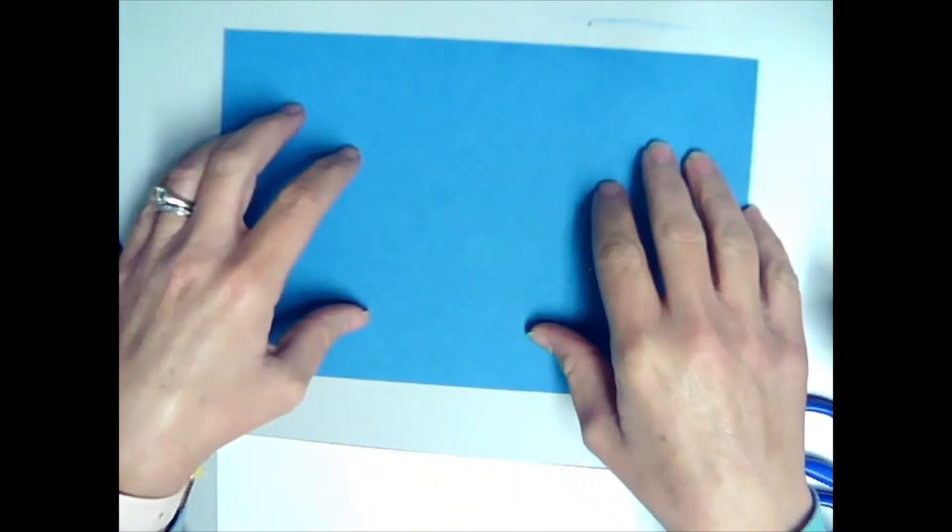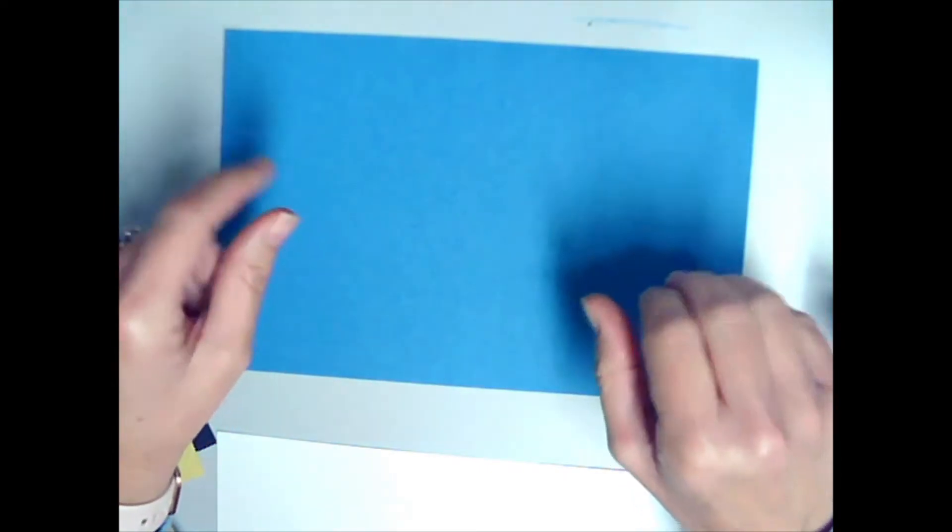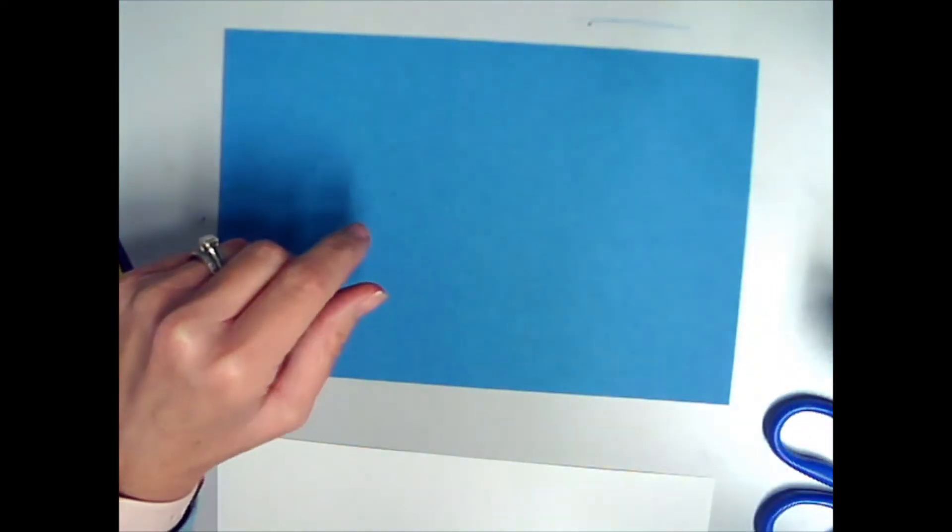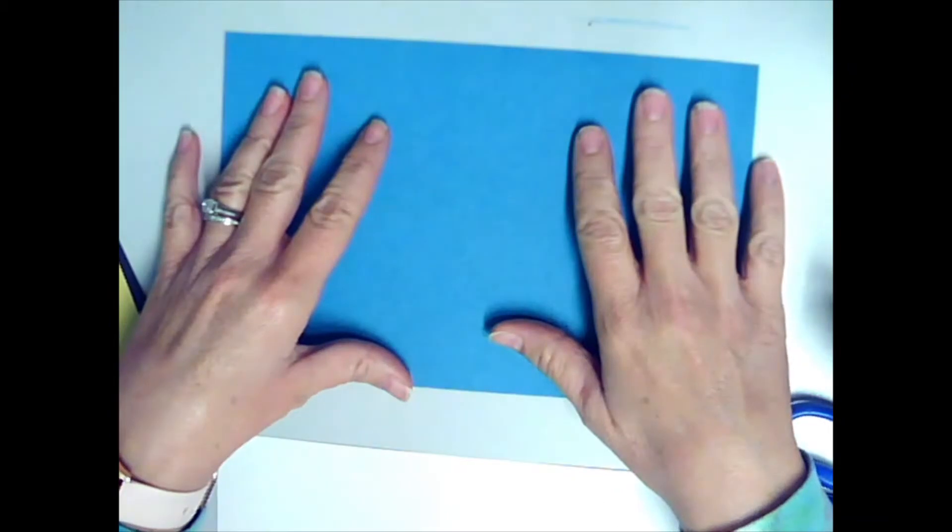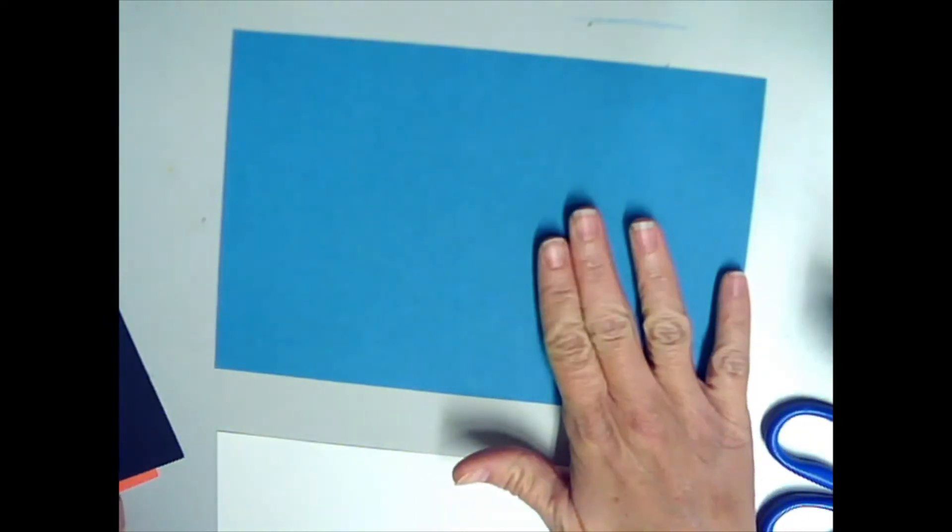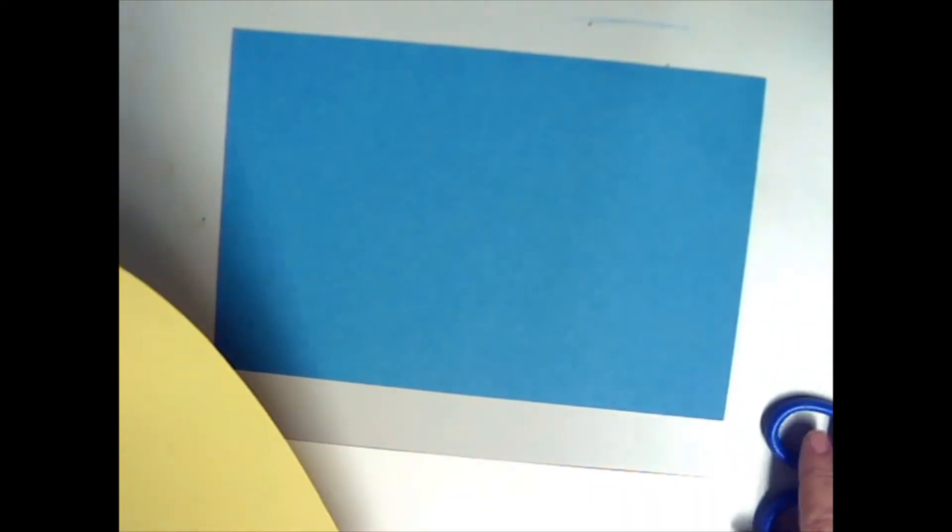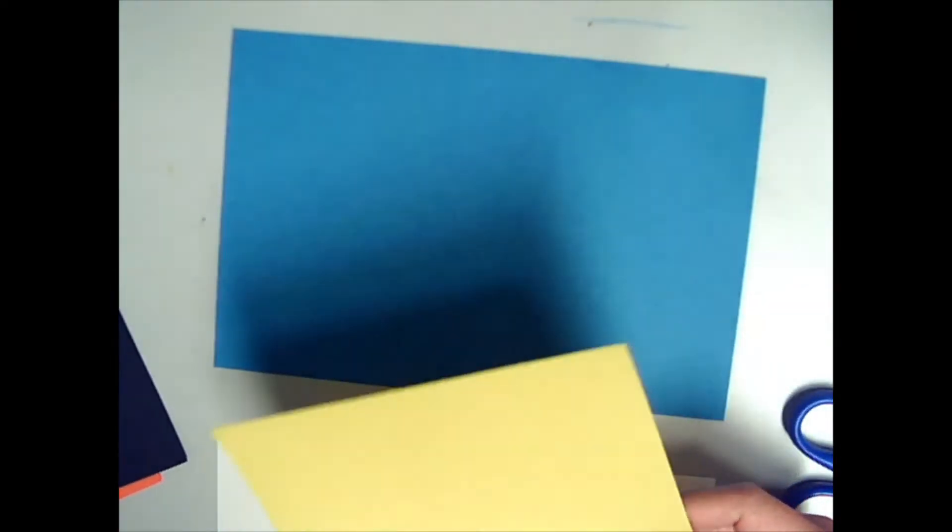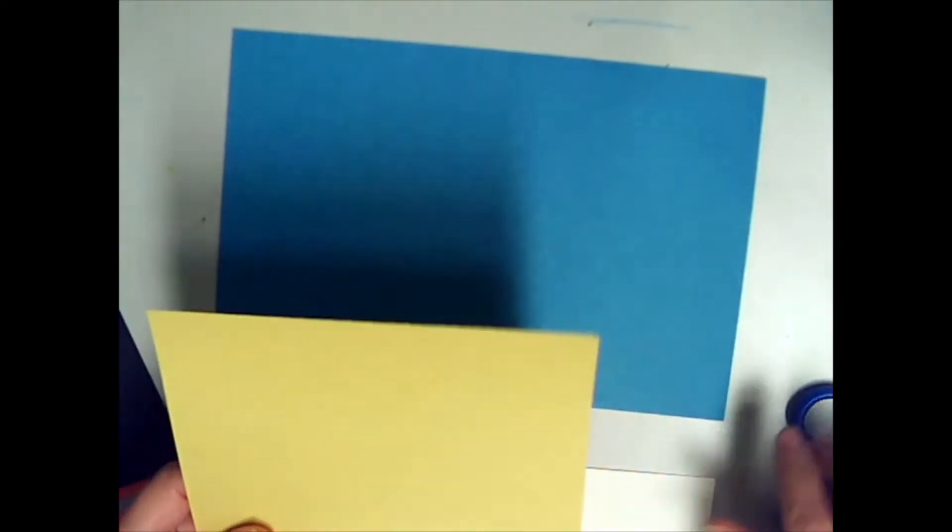The first thing you're going to do is you're going to choose one of your colors of paper to be your base or your background paper. Because I want to do an underwater scene, I am choosing my blue paper for that. Now I wanted to make my collage look like a coral reef. So I'm going to choose a lot of my bright colors to cut out my coral shapes from.